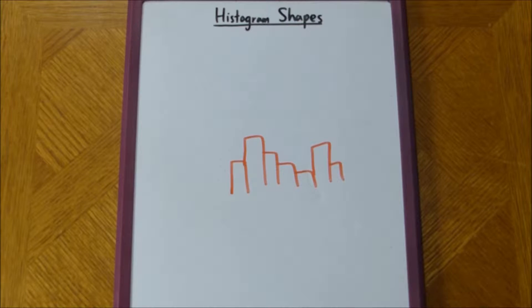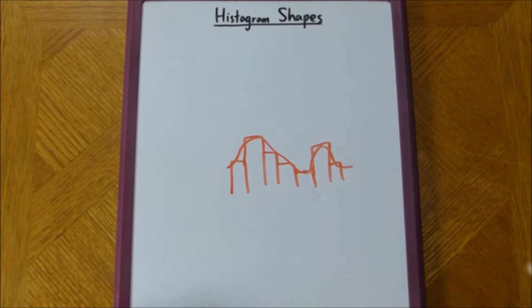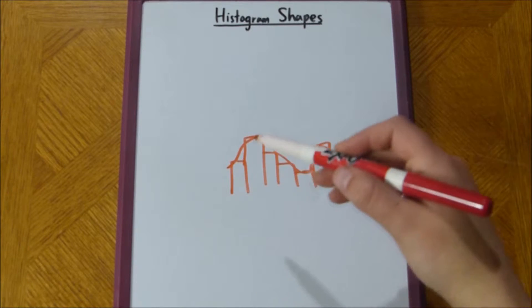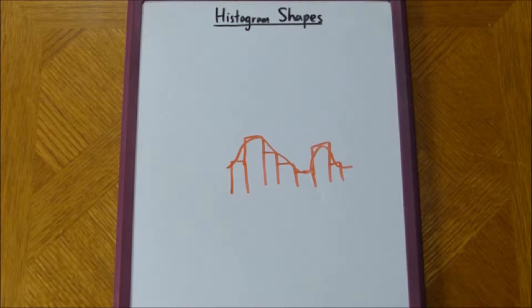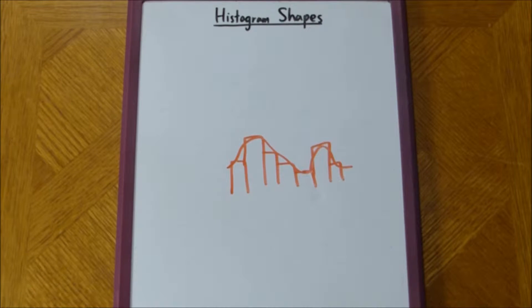And we can approximate the histogram with a smooth curve, which we call a smooth histogram. Smooth because we approximate a line to it, right?